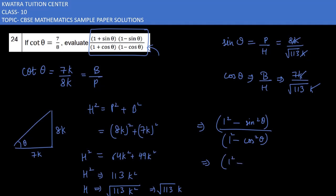Sin θ's value is 8/√113. Squaring it: 1 - 64/113 in the numerator. Cos θ is 7/√113. Squaring it: 1 - 49/113 in the denominator.